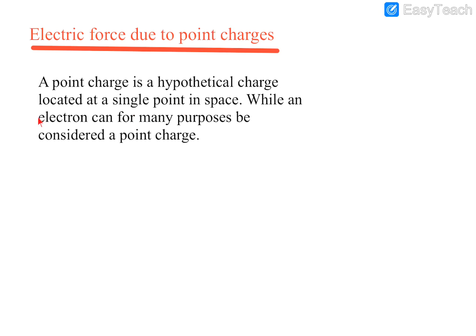If you consider the case of an electron, an electron has a very negligible size. So if you place an electron at a place, it will look almost like a point — a very very small point. So an electron can be considered as a point charge. It is a hypothetical charge located at a single point in space. Most of the time we will consider the electron as a point charge.